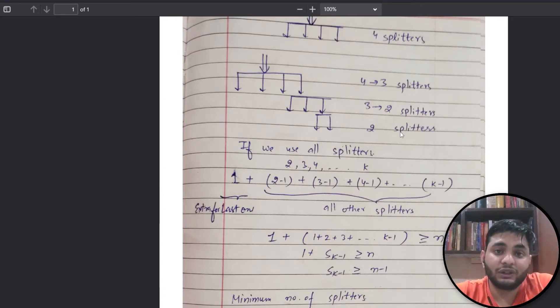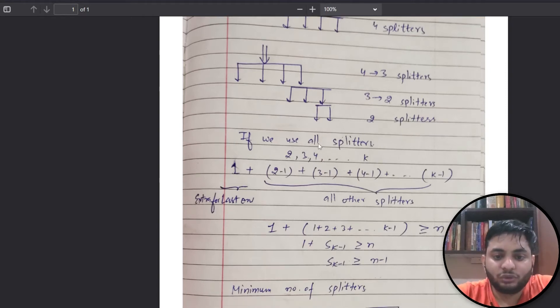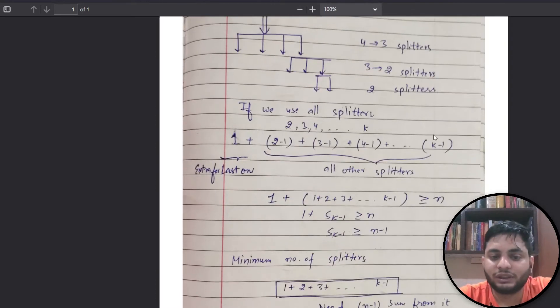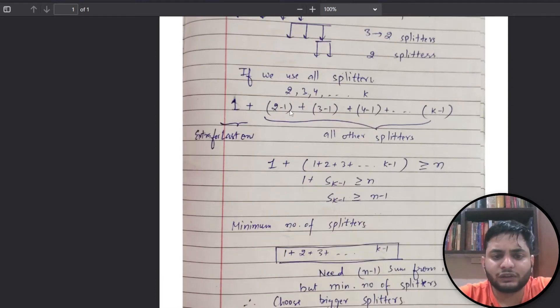If we use all splitters in the worst case to achieve n output pipes, we get 2 minus 1, then 3 minus 1, then 4 minus 1, till k minus 1. But in the last one I will get one extra splitter, plus one for the last one. All other splitters sum to 1 plus 2 plus 3 till k minus 1.